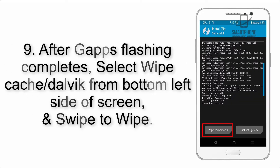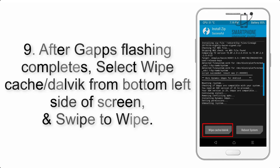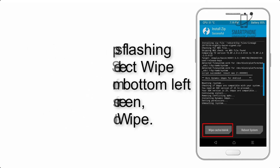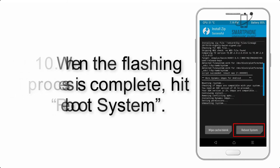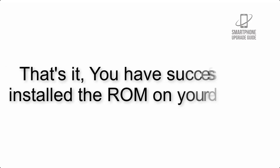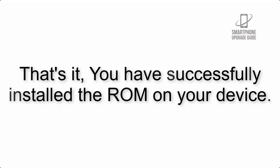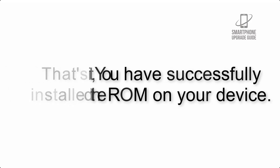Step 9: After GApps flashing completes, select Wipe Cache and Dalvik from the bottom left side of the screen and swipe to wipe. Step 10: When the flashing process is complete, hit Reboot System. That's it — you have successfully installed the ROM on your device.